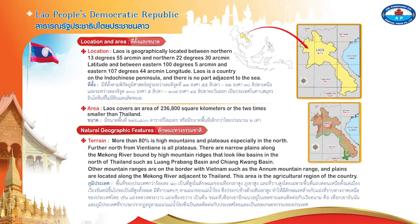Other mountain ranges are in the borderline with Vietnam, that is the Annam Mountain Range. Plain terrains are located along the Mekong River adjacent to Thailand. This area is the agricultural region of the country.